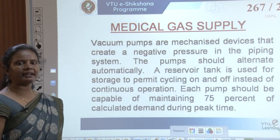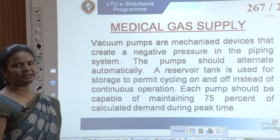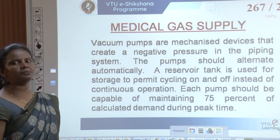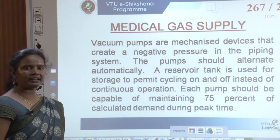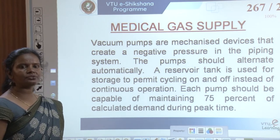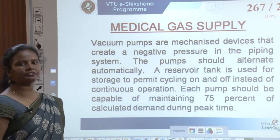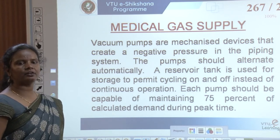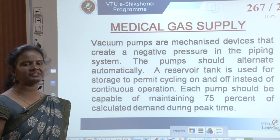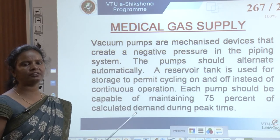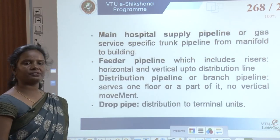Vacuum pumps are mechanized devices that create negative pressure in the piping system. The pumps should alternate automatically. A reservoir tank is used for storage to permit cycling on and off instead of continuous operation. Each pump should be capable of maintaining 75% of calculated demand during peak time.